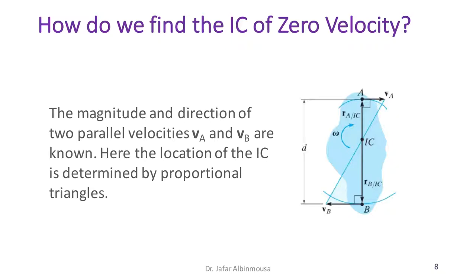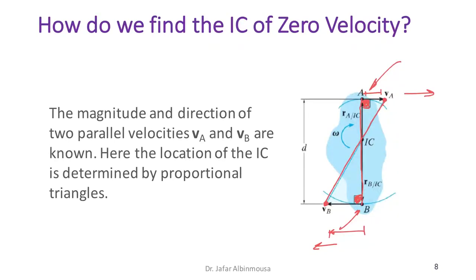In the third method, we have two velocities on the same rigid body that are parallel but opposite in direction and different in magnitude. We construct one line perpendicular to both velocities, then draw another line connecting the arrowheads of the two velocity vectors. The intersection of these two lines is the IC.